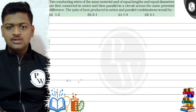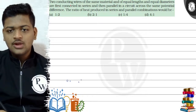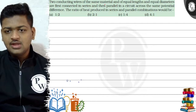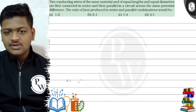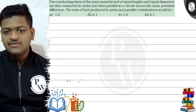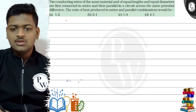Hello! Let's see this particular question. Two conducting wires of same material and of equal lengths and equal diameters are first connected in series and then in parallel in a circuit across the same potential difference. The ratio of heat produced in series and parallel combination would be?